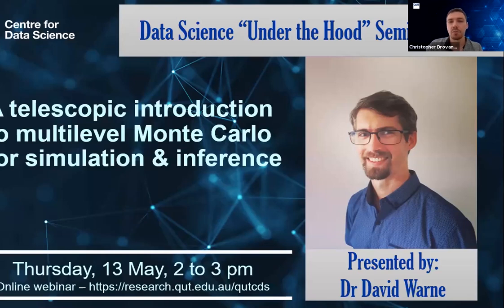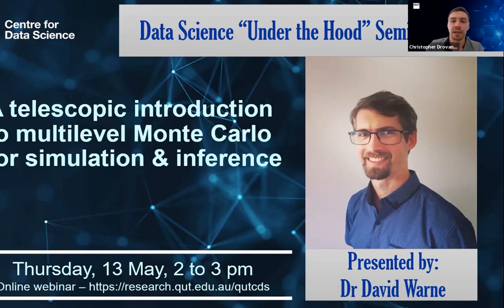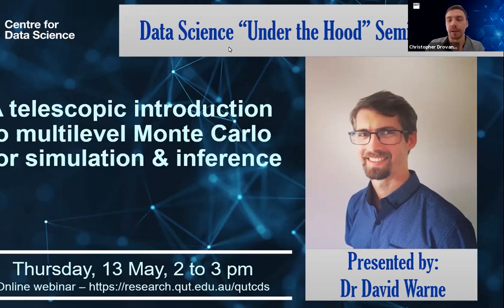Prior to that, David was a PhD student within the School of Mathematical Sciences at QUT, and even before that he worked for the high performance computing team at QUT. David's research is mainly focused on developing new mathematical models and statistical methodologies to tackle challenging real-world problems involving interacting populations, especially in ecology, biology and epidemiology. He's also able to exploit his HPC skills to tackle computationally challenging problems in computational statistics and data science.